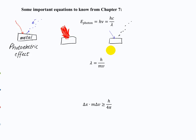Max Planck was the first to develop this equation. He didn't actually think light was really particles — he just said we'll pretend light is a particle because it makes all the math work out. But then when they started doing experiments, Einstein came in and said no, light really is a particle, it really does behave like a particle. That light particle is called a photon.